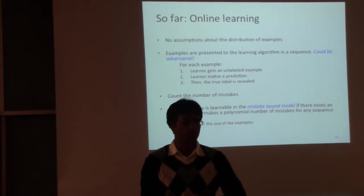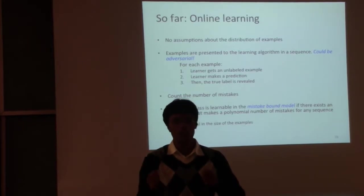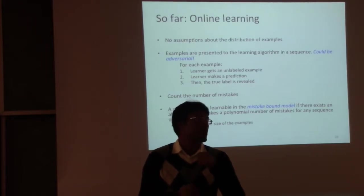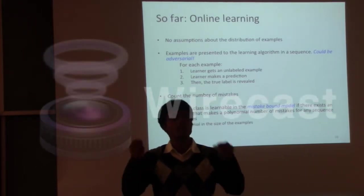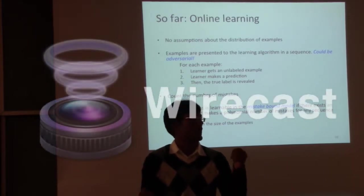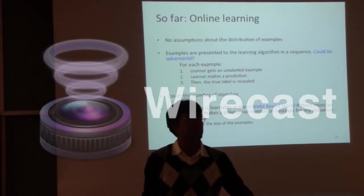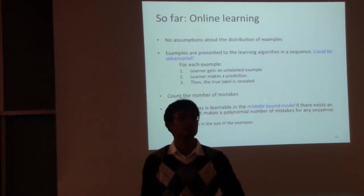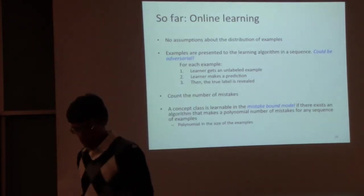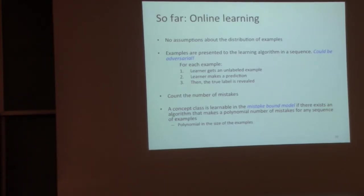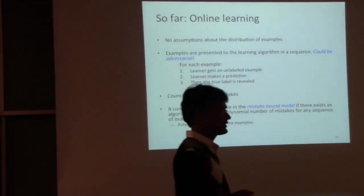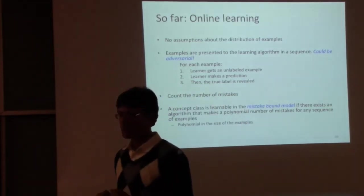The game is the following: you are presented an example — the learning algorithm gets an example x, it makes a prediction, and then the true label of x is revealed. If the algorithm makes a mistake, it might correct it, then throw away the example and wait for the next one. That's the general outline of these algorithms. Under the mistake-bound model, our goal is to count the number of mistakes — all we want to do is not make too many mistakes.